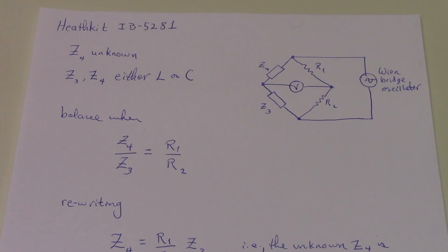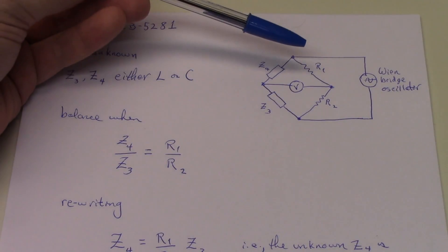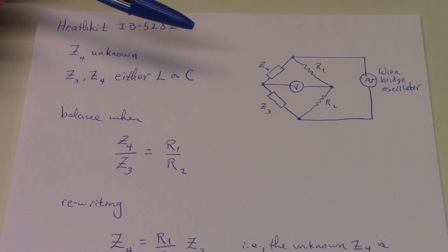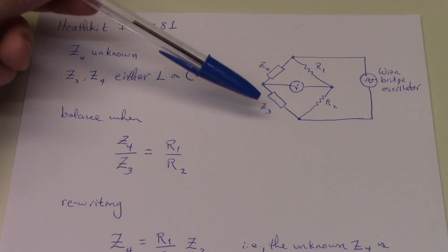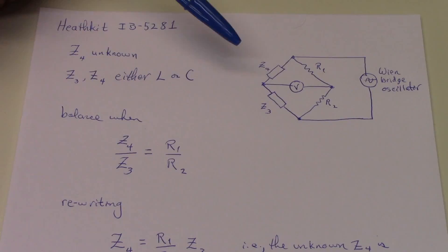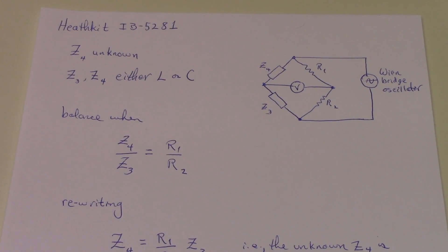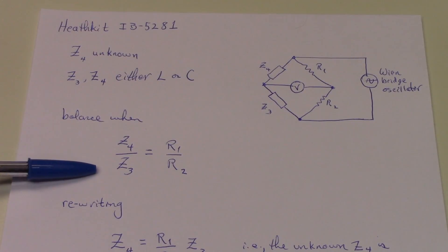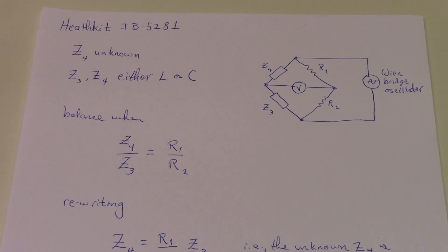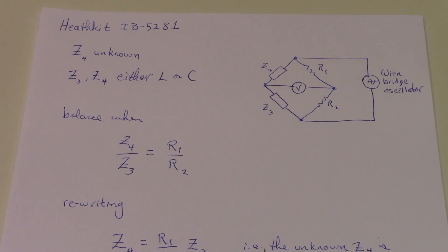The circuit's a little bit more complicated, but the basics are given in the manual. Essentially consider a simple Wheatstone bridge, where we have two resistances, R1 and R2, and then two impedances, Z3 and Z4. The Zs can be either resistance or inductive or capacitive in nature. Z4 is our unknown, and the balance condition is that Z4 is to Z3 as R1 is to R2.